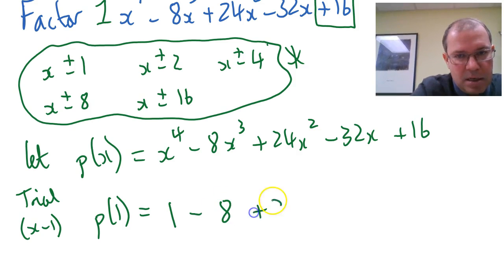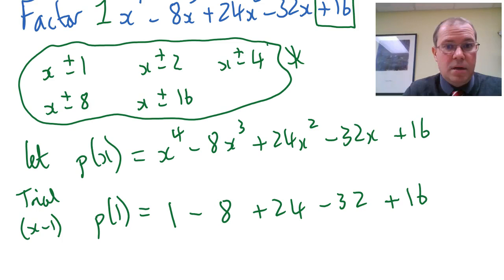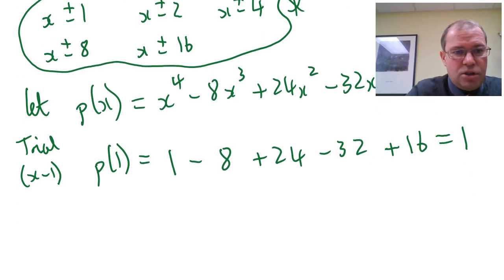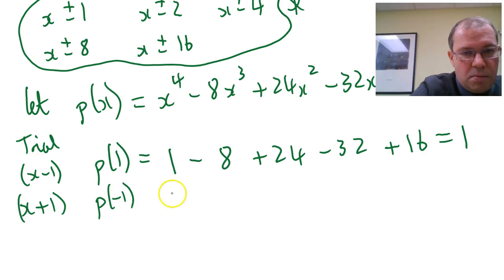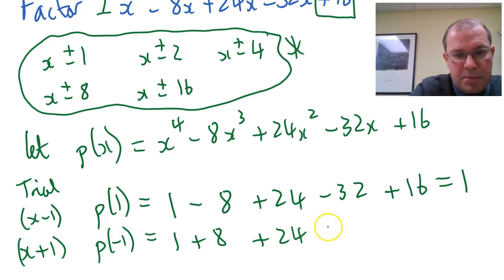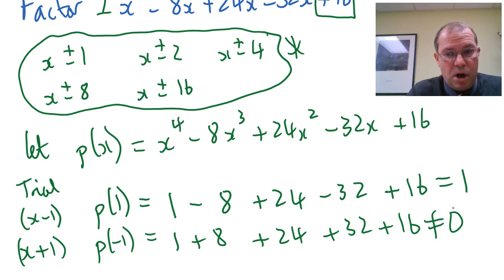Is p of 1 equal to 0? Let's try it: 1 minus 8 plus 24 minus 32 plus 16. We can see 24 plus 16 is 40, add 1 is 41, minus 8 is 33, then minus 32 gives 1. So p of 1 is not 0, meaning x minus 1 is not a factor. Let's try x plus 1, so we put minus 1 in. Minus 1 to the power of 4 is 1, minus 1 cubed is minus 1 times minus 8 gives plus 8, then plus 24, plus 32, and plus 16 — it's clearly not equal to 0. So x plus 1 is not a factor.